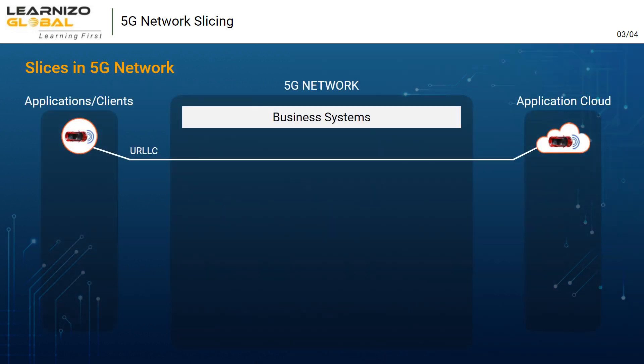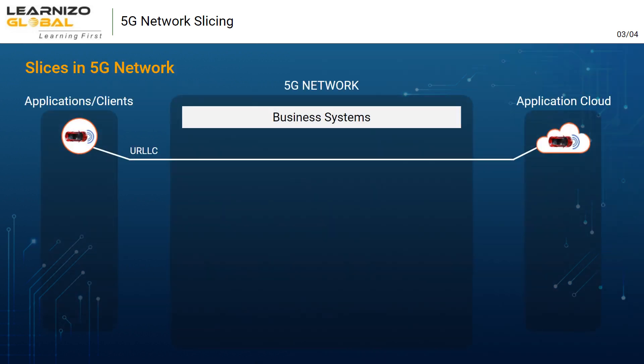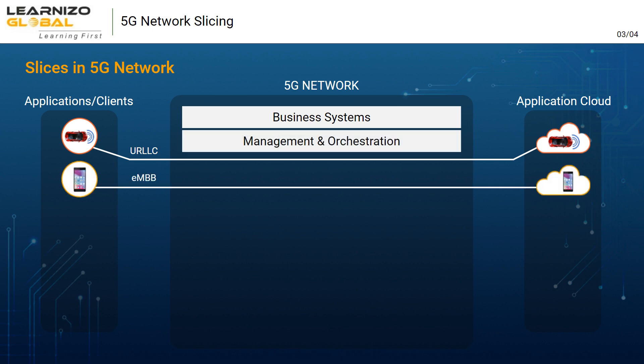Network slices will be created on a shared physical infrastructure. However, based on the requirement, some portions of the network can be dedicated for one service, use case, or enterprise customer, and are identified by unique identifiers.